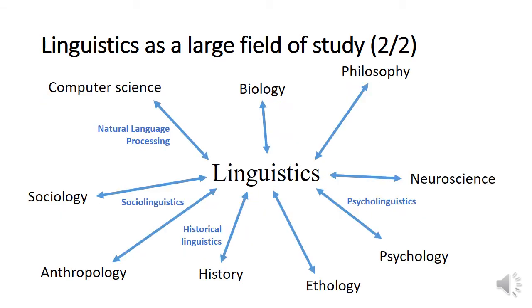Linguistics is also a large field because it connects to quite a number of other disciplines. Language is very crucial for human beings — we use it every day, and without language we would be very different. So we connect linguistics with biology, because we want to understand the biological basis of language — do we have genes related to language, and how are they related? Linguistics is also connected to neuroscience, because we want to better understand how language is processed in the brain.